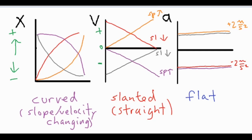On the other end, negative accelerations could speed something up or slow it down. Negative two added to a positive number is going to shrink it down toward zero. But if you already have a negative velocity and you're subtracting two, it's going to become greater and greater in the negative direction, so you're going faster and faster in the negative direction.